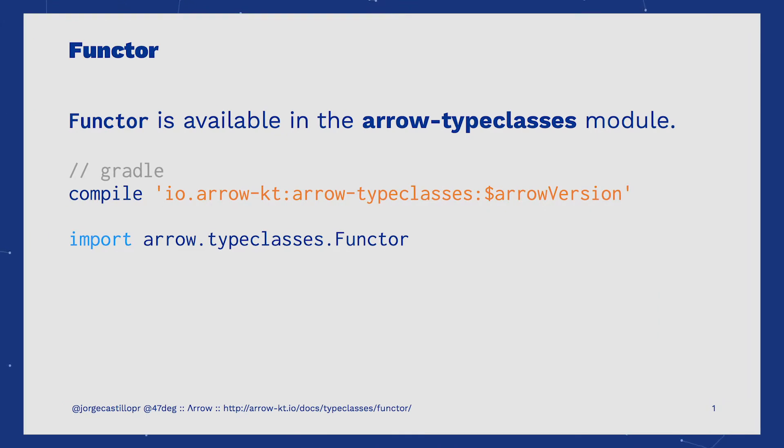The Functor is provided on the Arrow type classes artifact. Just add it to your build.gradle configuration file and you'll be good to go.